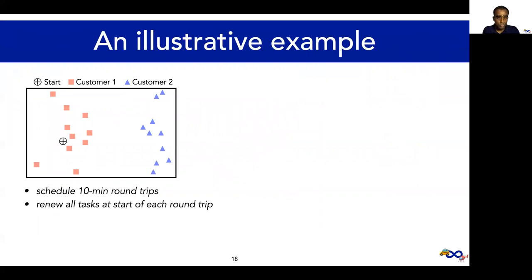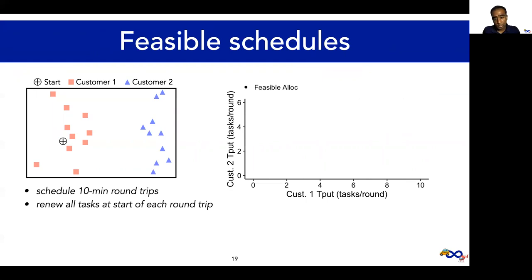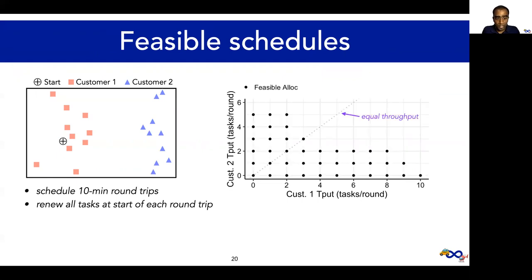Let's say we have two customers with tasks distributed as shown in the map, and the vehicles start here. We're interested in computing 10-minute round trips, and for simplicity, we assume that all tasks are renewed at the start of each round trip. We're going to visualize the schedules in terms of their per-customer throughputs on this chart. The x and y axes show the throughputs for customers 1 and 2 respectively. Each dot here corresponds to a feasible 10-minute round trip schedule, computed by invoking a VRP solver. This point here corresponds to the schedule with maximal throughput. Notice that it favors customer 1, since its tasks are closer to the start location and thus easier for the vehicles to fulfill. We call the schedules along the y equals x line fair, since they all deliver equal throughput to both customers.